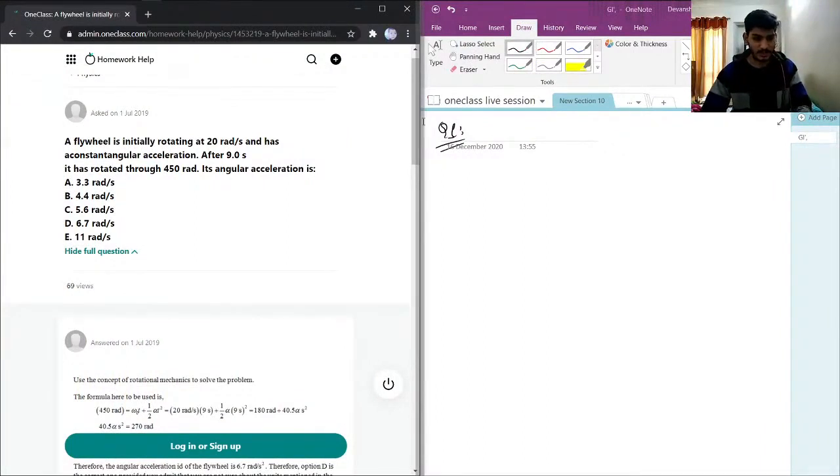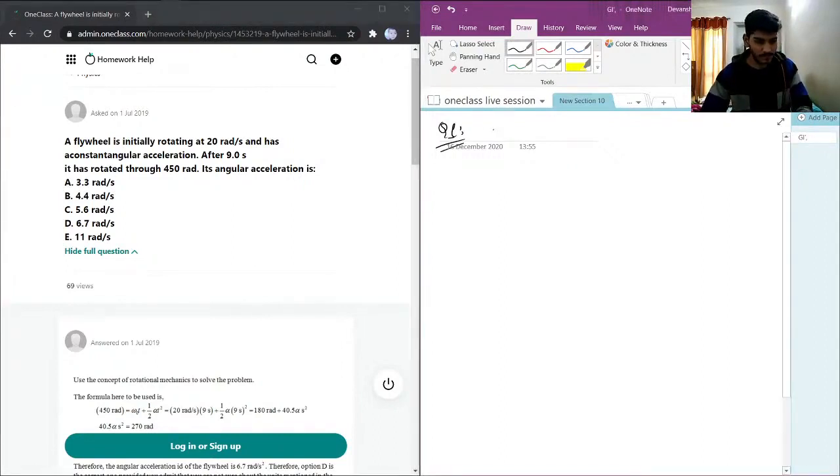The problem states that a flywheel is initially rotating at 20 radians per second and has a constant angular acceleration. After 9 seconds it has rotated through 450 radians. What is its angular acceleration? We have multiple choices. Let me write down the initial rotation and the given values. After 9 seconds we have rotated θ = 450 radians.